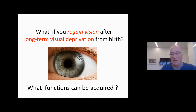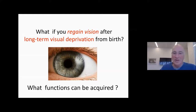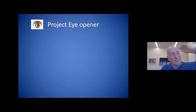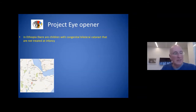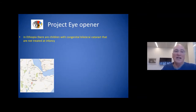This learning is done in an unsupervised manner and it's quite sophisticated in terms of the mechanisms involved. It's not clear if you had very little vision in these formative years of infancy and regained vision only at the age of five, eight, ten, or fifteen — what functions can you acquire? This is the question we are interested in. As Sharon mentioned, we started the project Eye Opener in Ethiopia, where there are children with congenital bilateral cataracts that are not treated in infancy. Cataract is a very common disease at age 60, 70, and 80, but it's much less common at infancy.